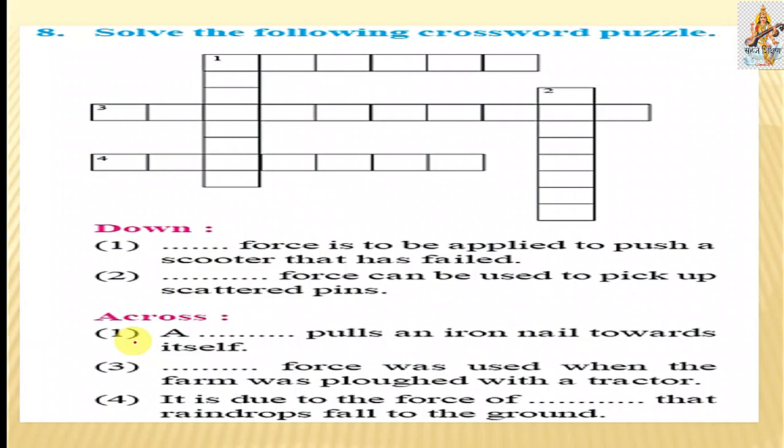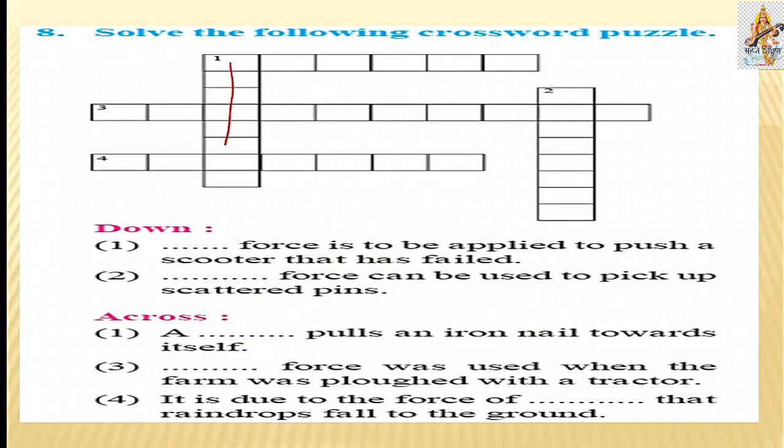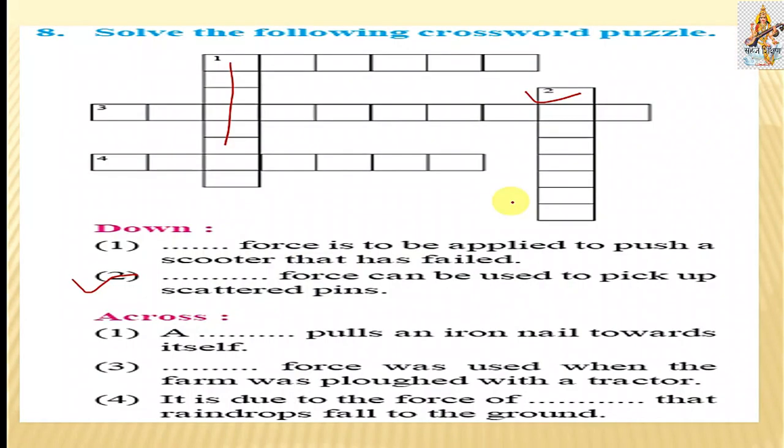Question 8. Solve the following crossword puzzle. Downward first. Muscular force is to be applied to push a scooter that has failed. You must push by your hand. So it must be the muscular force. Second down, the force can be used to pick up the scattered pins. Which force you use? You must use some magnetic type of force. Question downward 2 is magnetic force.